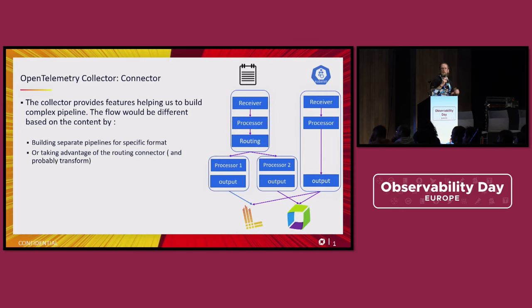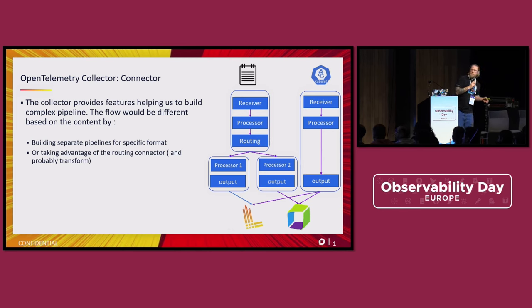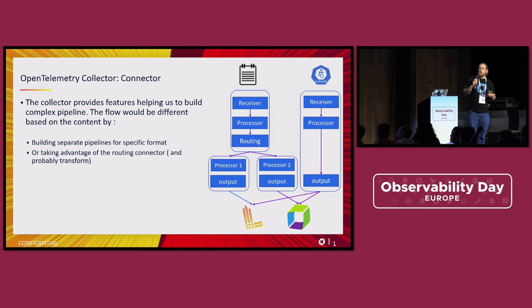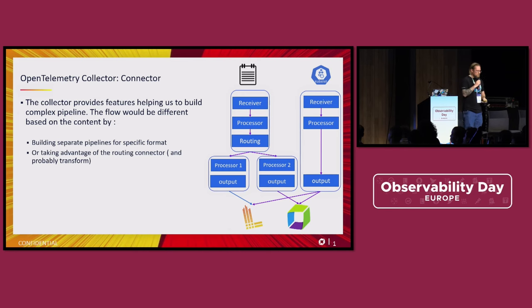On the Collector side, you don't have this notion of tags, but they introduced connectors — specifically the routing connector. The routing connector acts like a switch: based on resource attributes, it triggers one pipeline or another. So you can do similarly complex pipelines in the Collector, it's just that you'll need to design more pipelines. The pipeline file structure will therefore be much larger than the one from FluentBit.